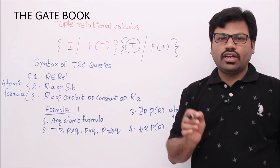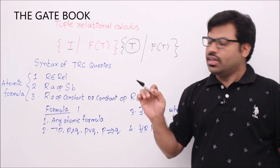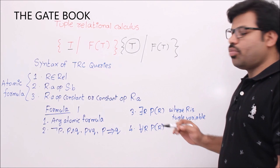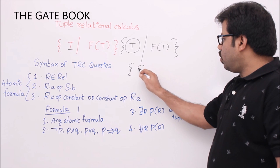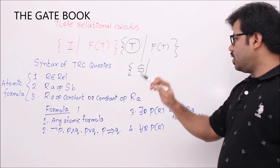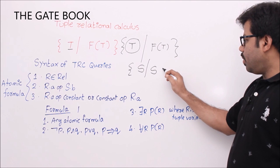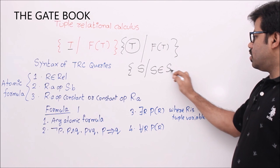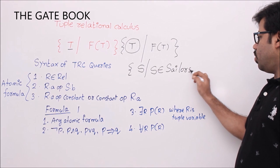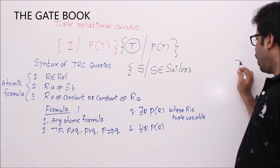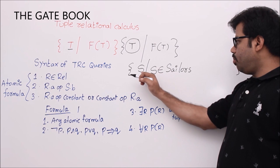What is the formula? I will give you one example of a formula, after which we will see the formal definition. An example of a formula is this one. I want to print all the tuples of sailors. S is a sailor tuple. Why is it a sailor tuple? Because S belongs to the sailors table. So this is called a formula.